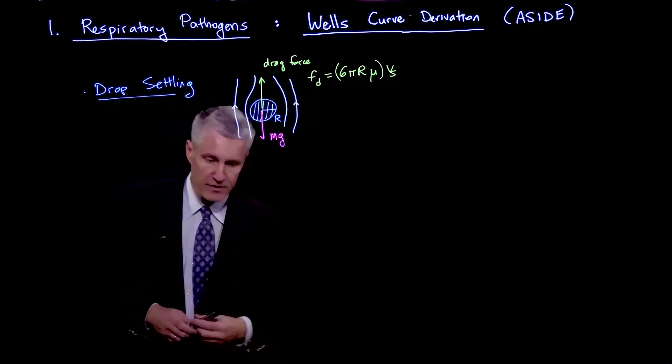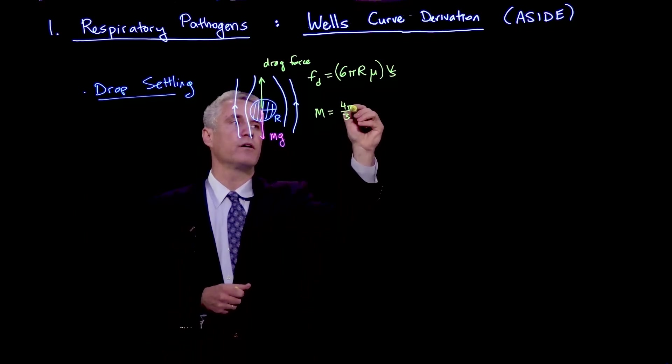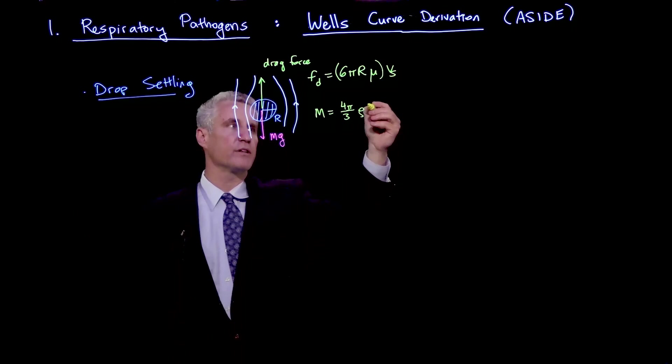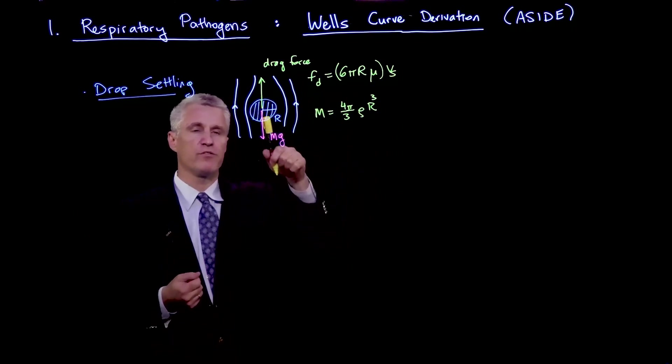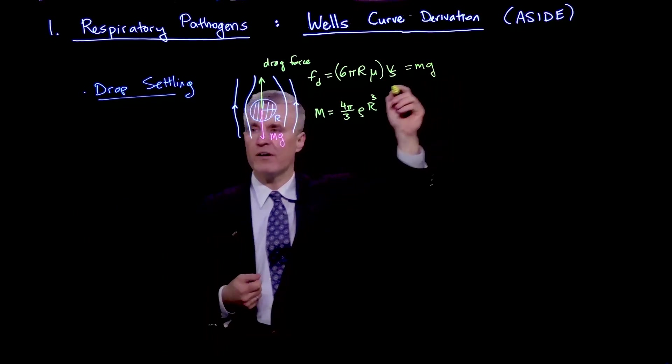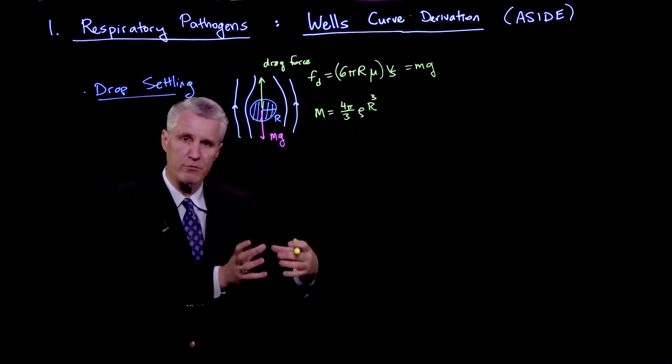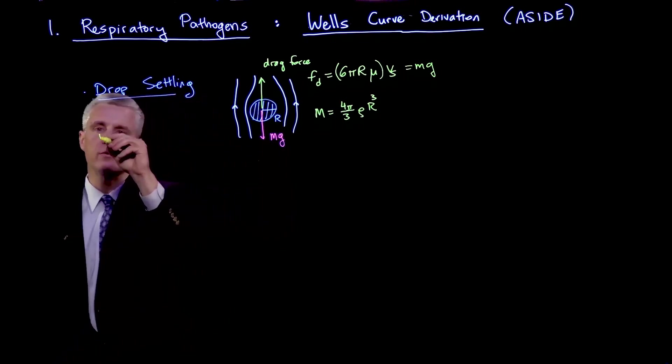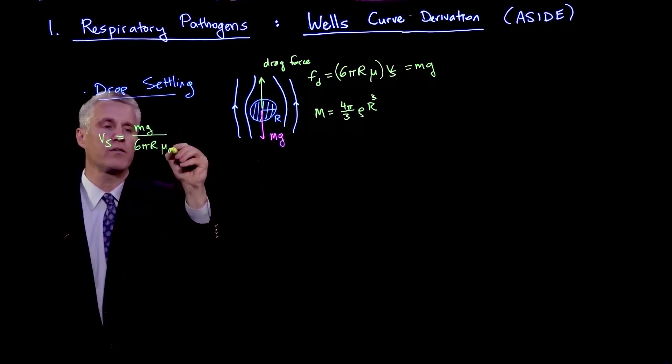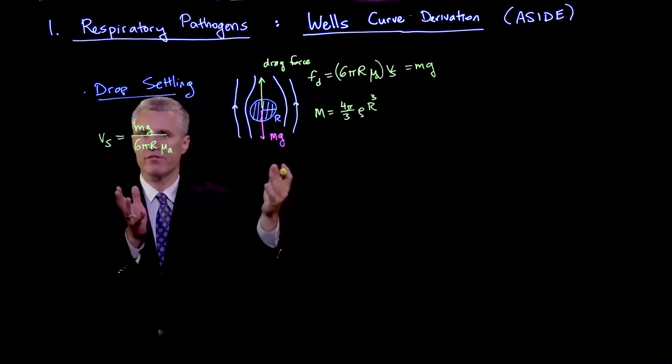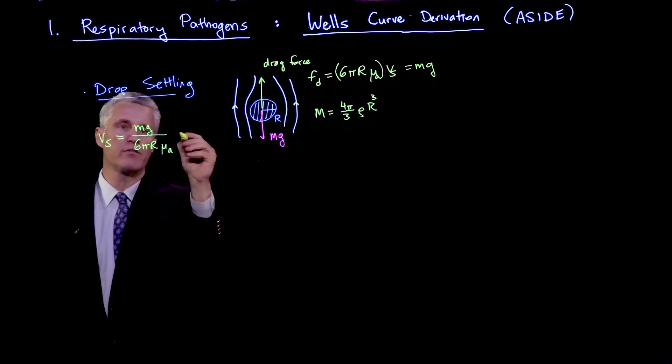We can furthermore say that the mass of the droplet is 4π/3 times the density of the droplet liquid times the radius cubed. Given the mass of the droplet, there's a force balance between the gravitational force mg and the drag force when the particle reaches a terminal velocity. If we think of Vs as the terminal velocity where it's accelerated until there's a balance between the forces and it's moving at a constant speed, it's given by this force balance. From that equation, we can solve for the settling velocity, which is mg divided by 6πr. I'll call this μa of the air.